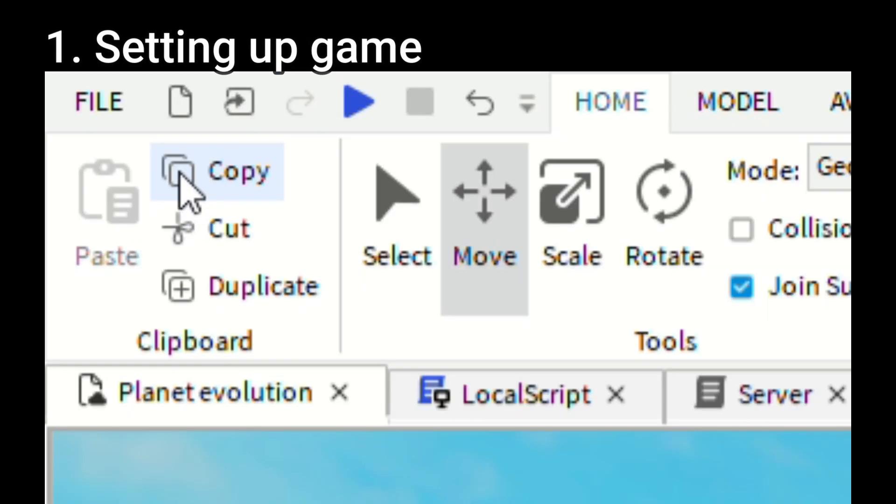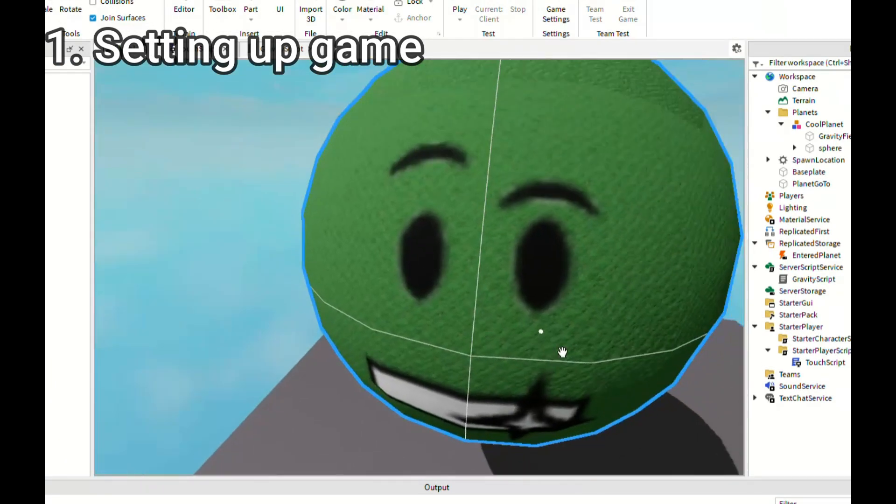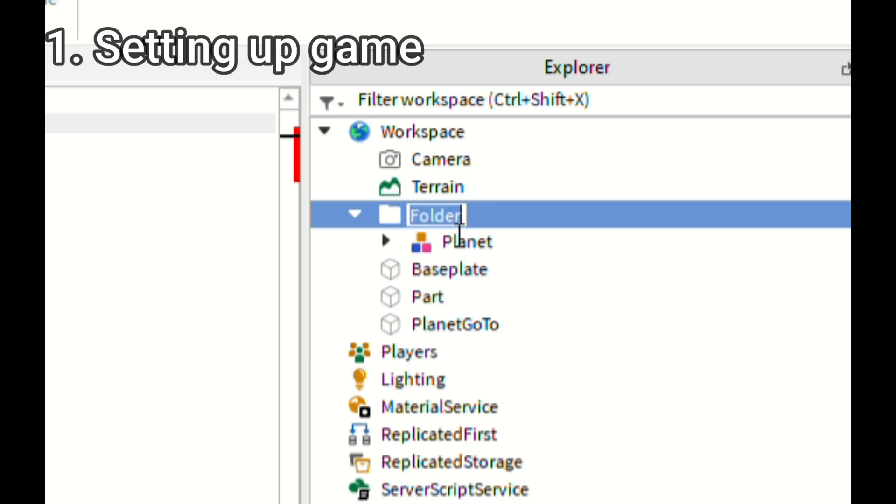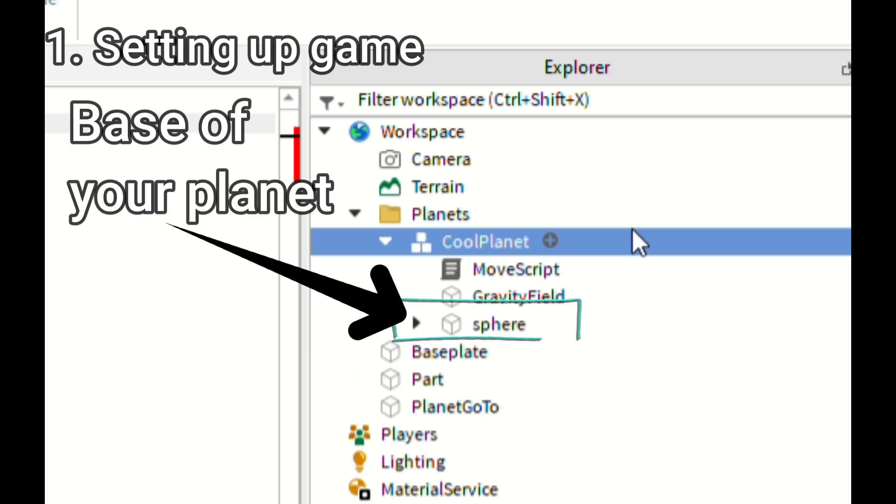First you need to copy and paste or insert a sphere into your game. You first need to place your planet into a model, name the model planet and name the base of planet sphere.